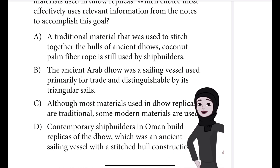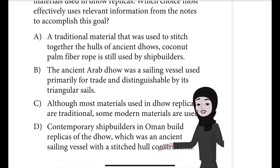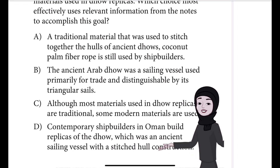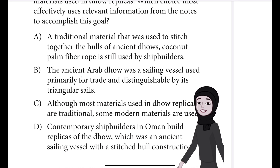Choice C: Although most materials used in Dhaw replicas are traditional, some modern materials are used. Choice D: Contemporary shipbuilders in Oman build replicas of the Dhaw, which was an ancient sailing vessel, with a stitched hull construction.